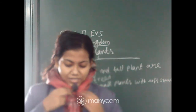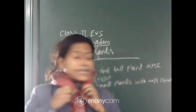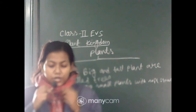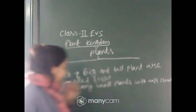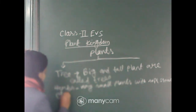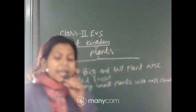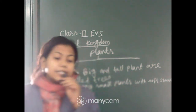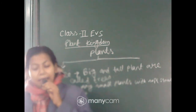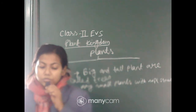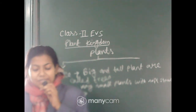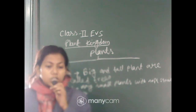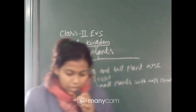Plants with weak stems which need support to climb up are called climbers. Creepers are plants which grow along the ground. Examples of climbers include grapes, and examples of creepers include watermelon and bottle gourd.